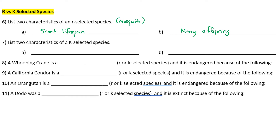Number seven: list two characteristics of a K-selected species — the opposite of r-selected. Long lifespan and few offspring. An example of a K-selected species would be a large mammal like the elephant.